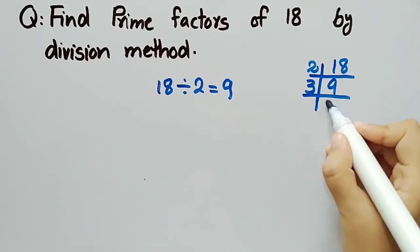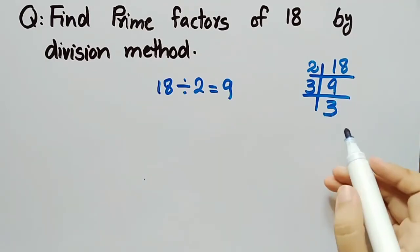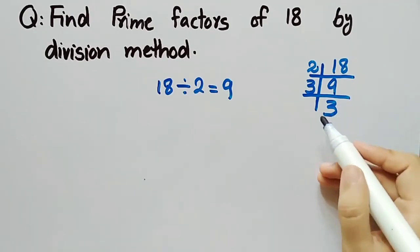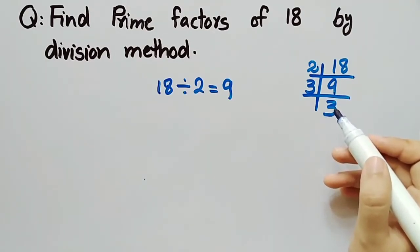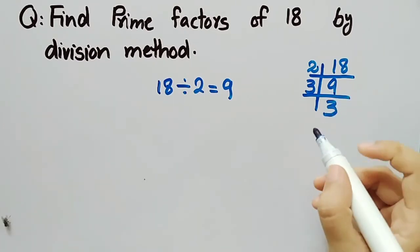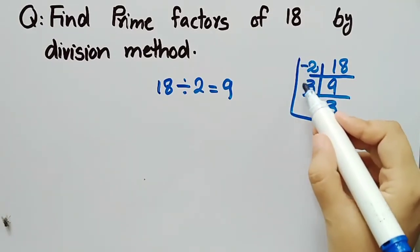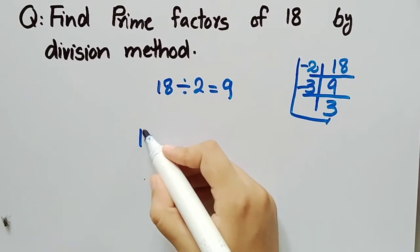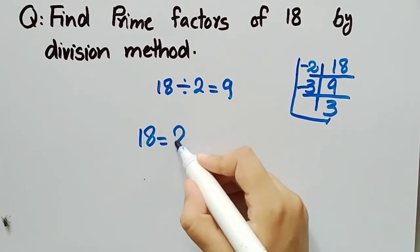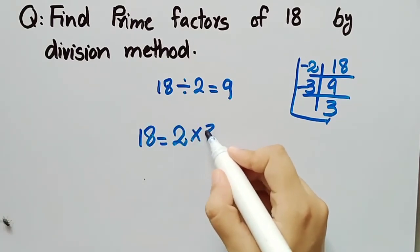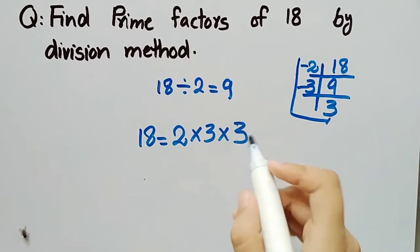3 times 3 is equal to 9. Since 3 is a prime number, we cannot further factorize it. The prime factors of 18 by division method are these numbers: 18 is equal to 2 multiplied by 3 multiplied by 3. This is the prime factorization of 18 by division method.